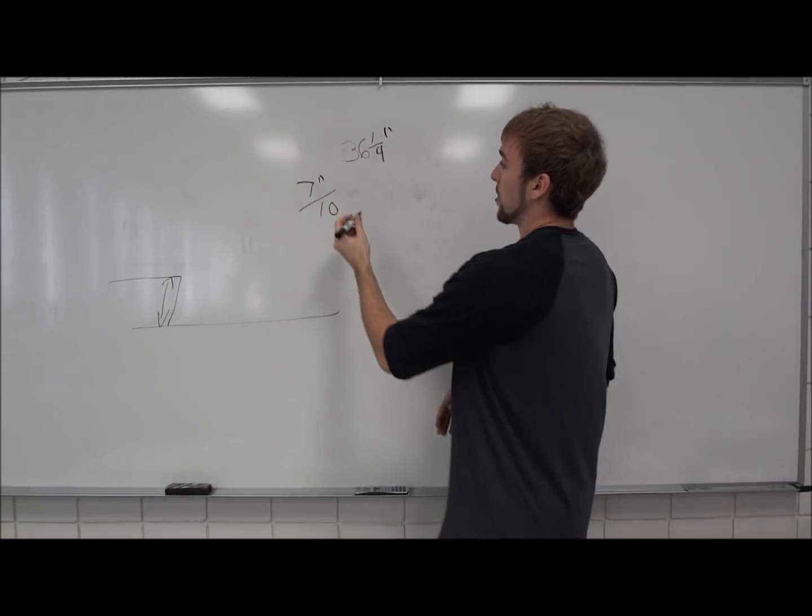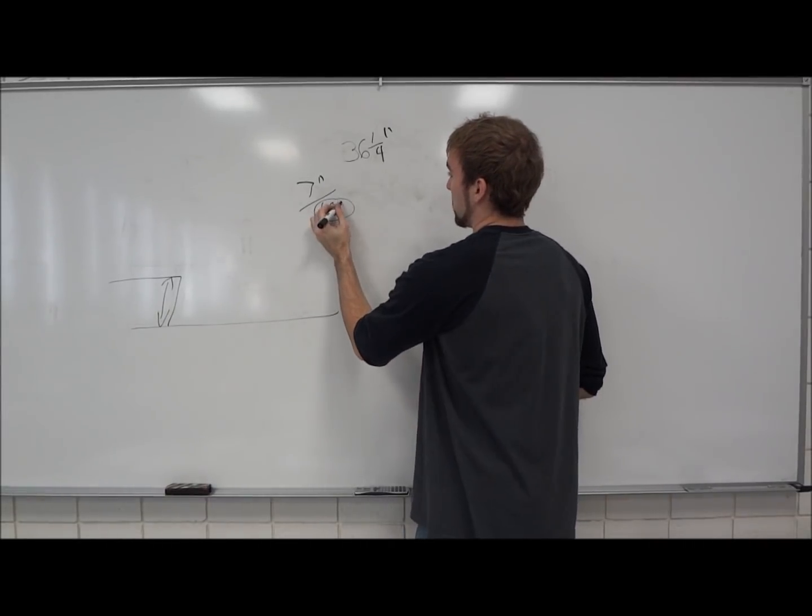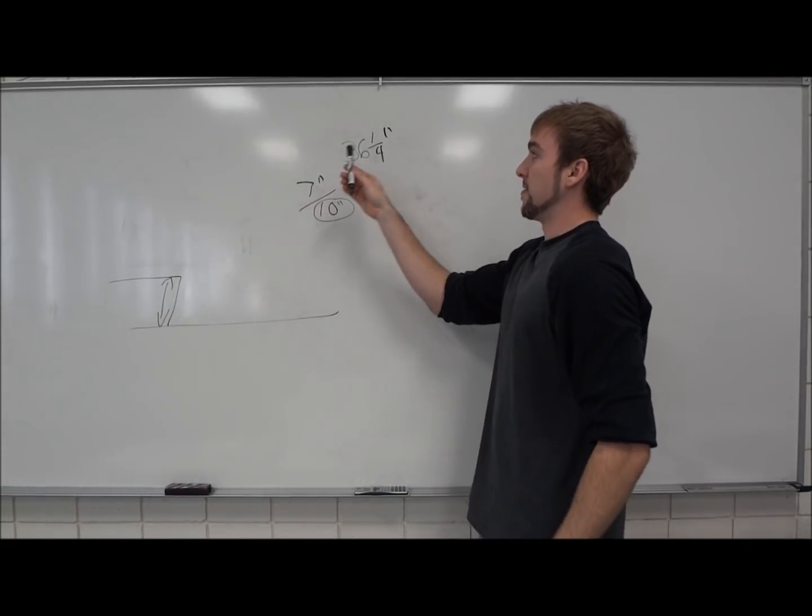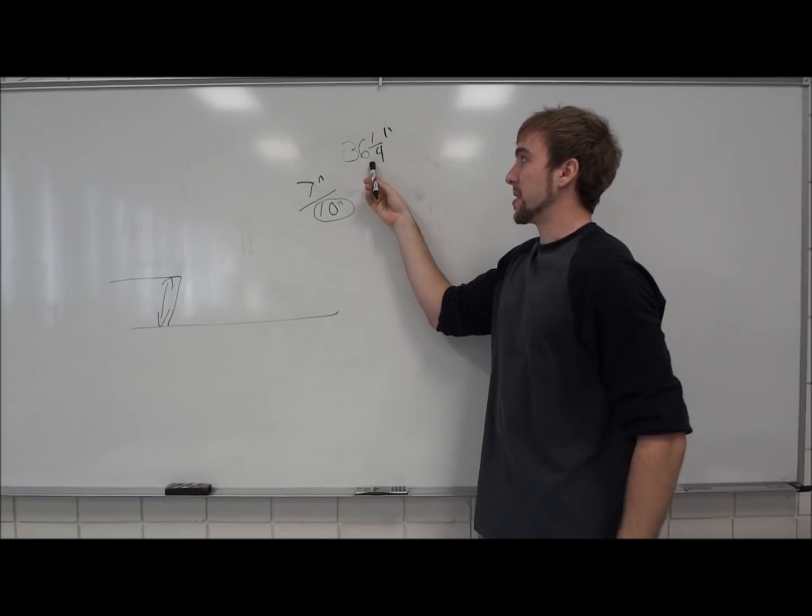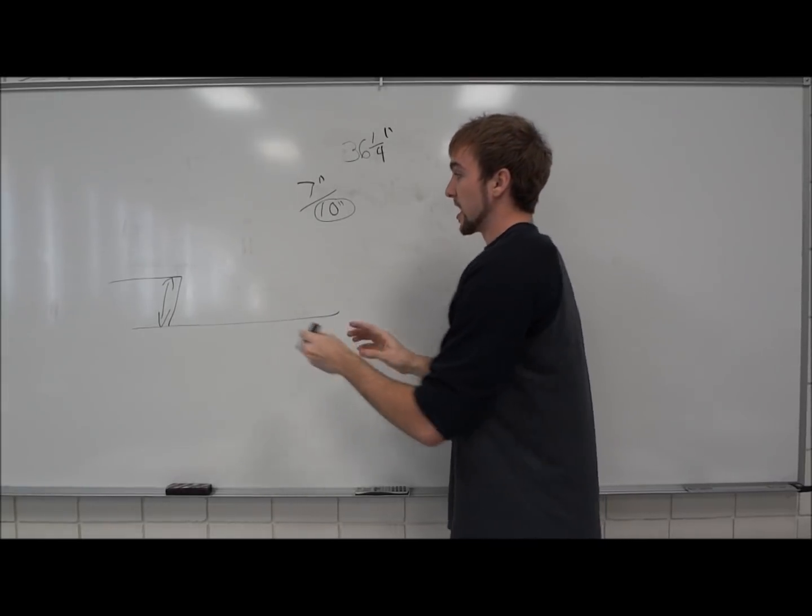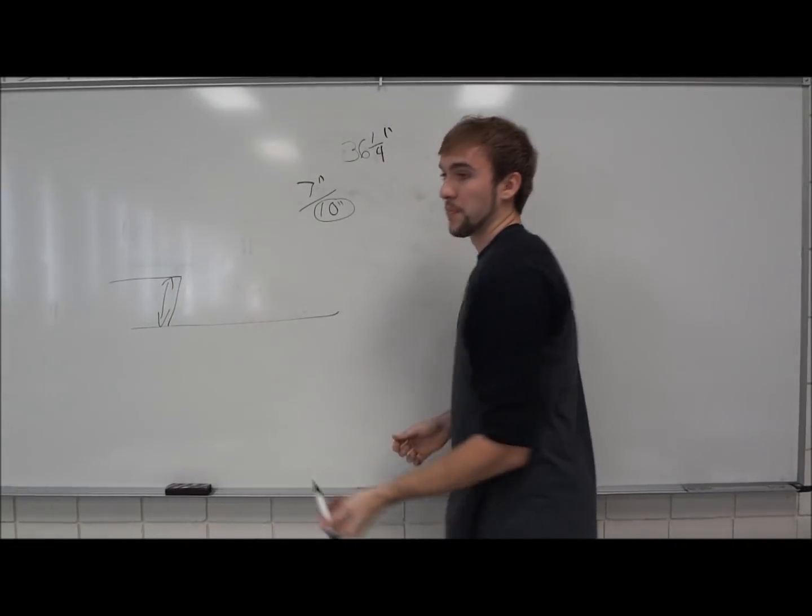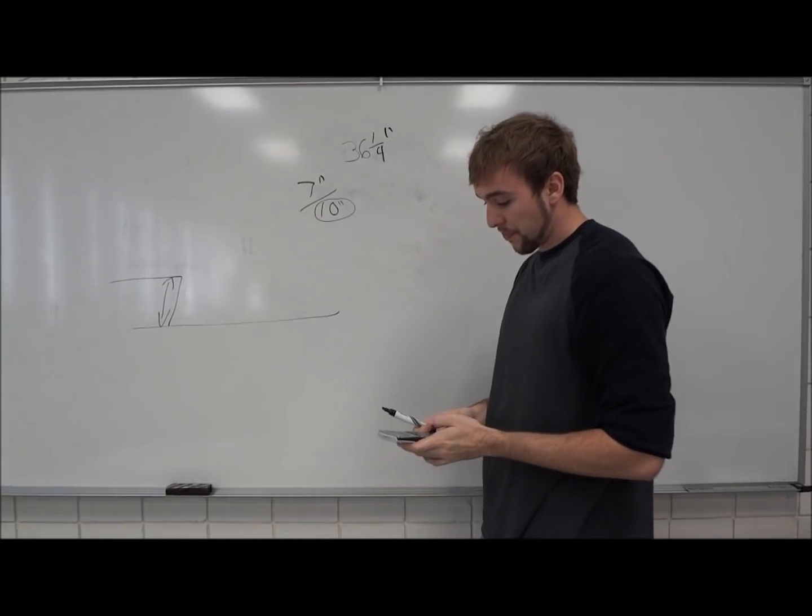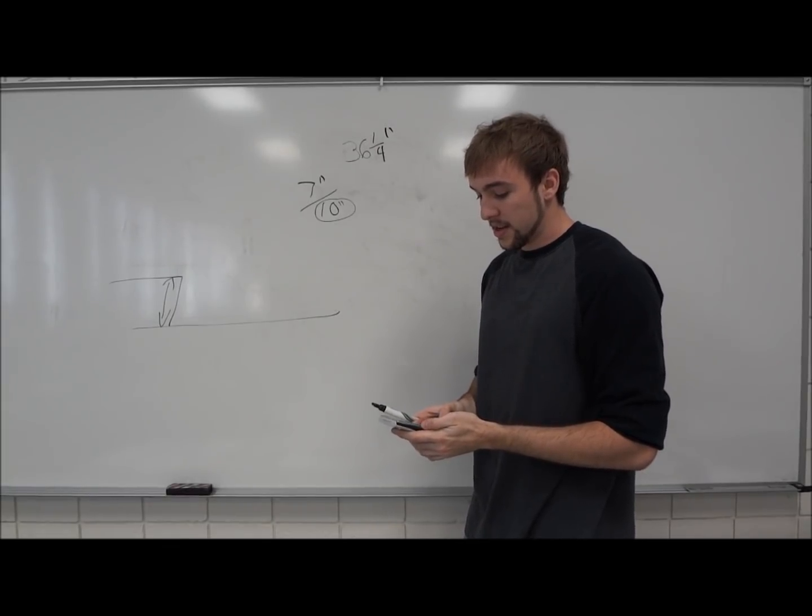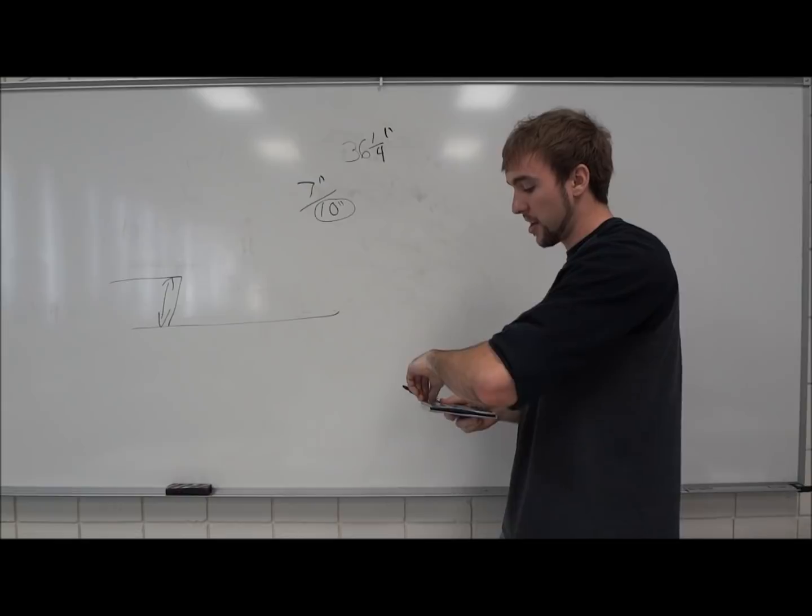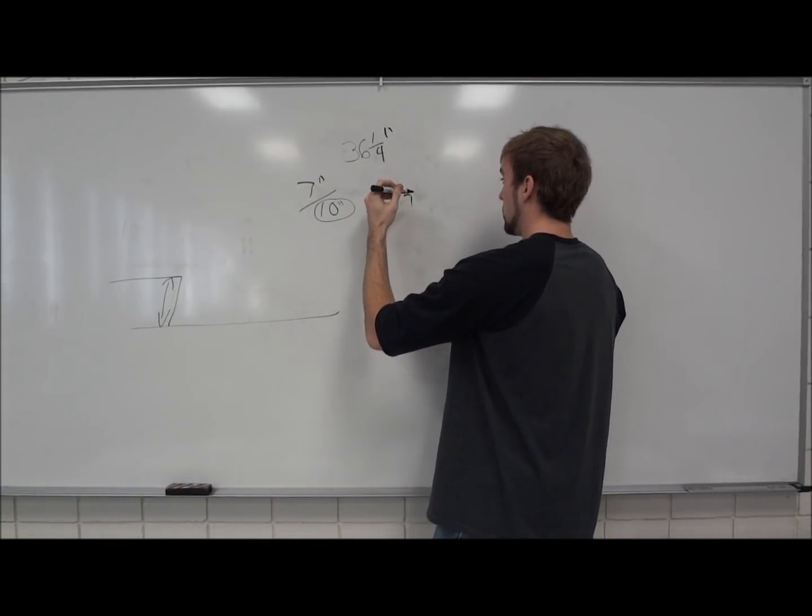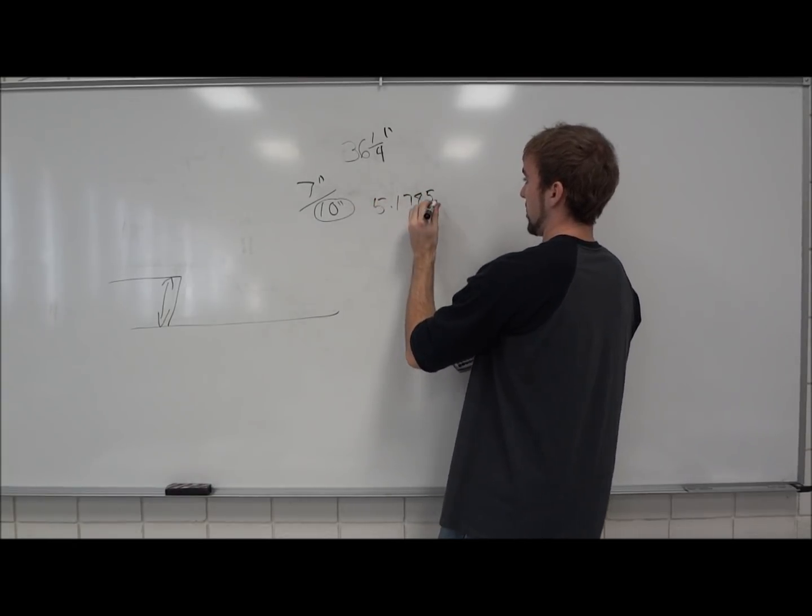With that, we already know that we're going to make this run the same. But for the rise, what we're going to do is take that 7 inch rise and we're going to divide it by the total rise, 36 and a quarter inch. And with that, we're going to find out how many steps we're going to need to get from here down to here. So using a calculator, 36.25 or a quarter of an inch divided by 7. What we get is 5.1785 and so on.